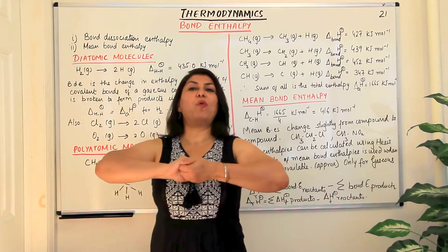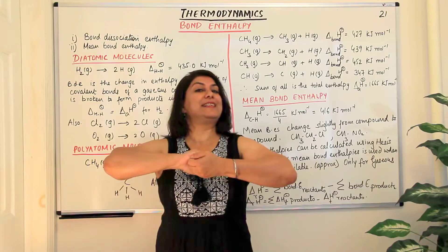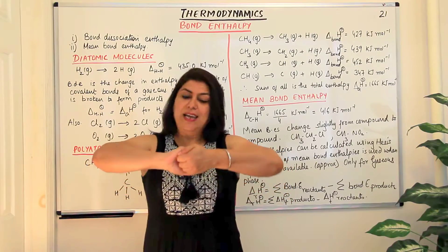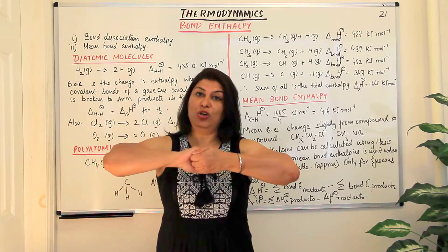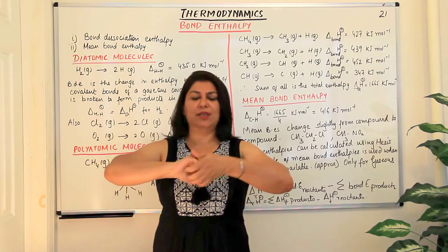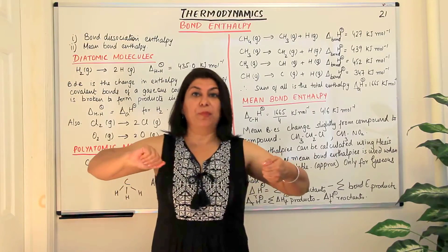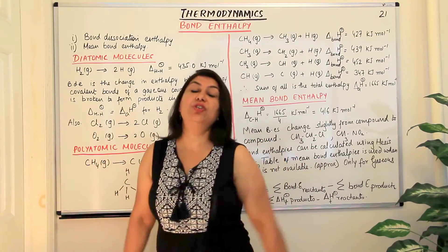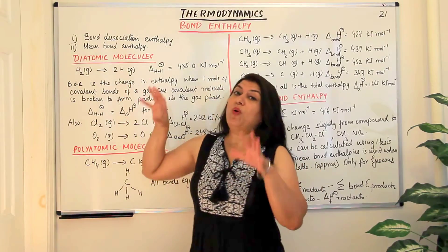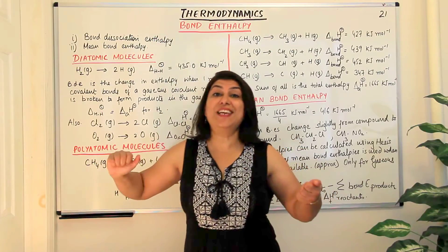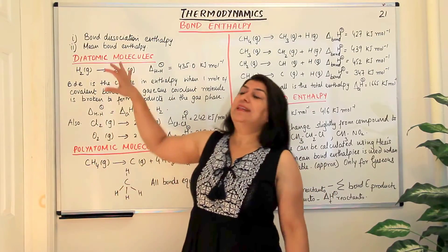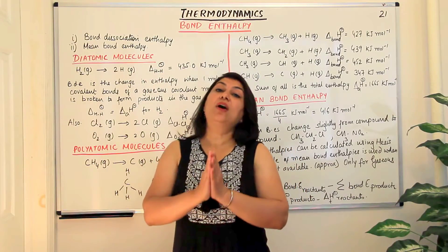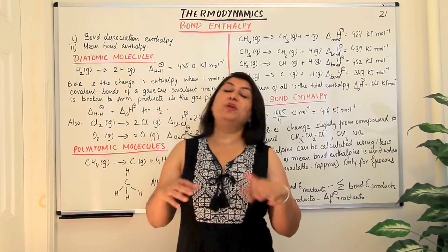Imagine a bond to be a knot tied between two parts of a rope. In order to break that bond, you need to provide energy — you have to cause something to break the bond. So whenever bonds are broken, energy has to be given to a substance. Bond dissociation enthalpy, where you're breaking bonds, is defined as the amount of heat that has to be provided to break one mole of bonds between two atoms.